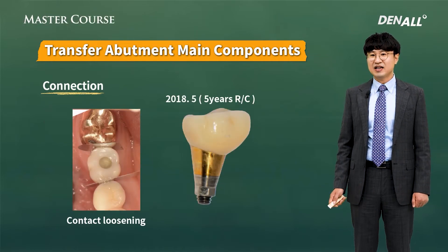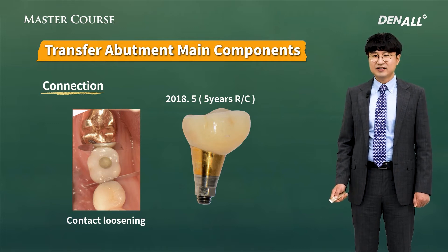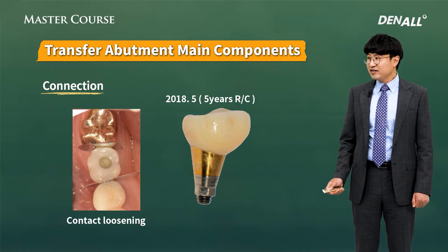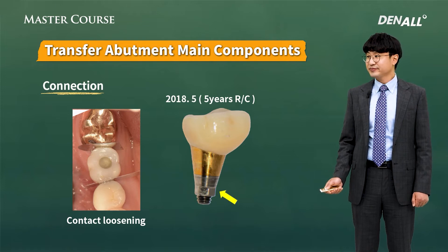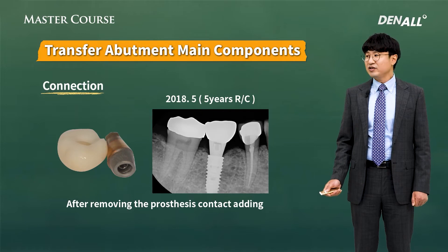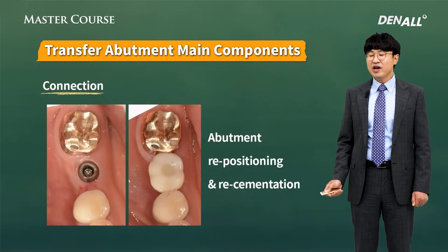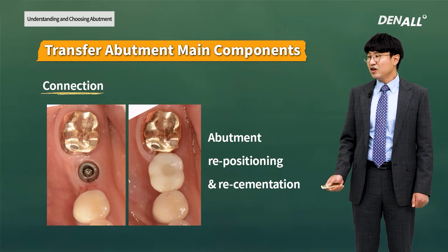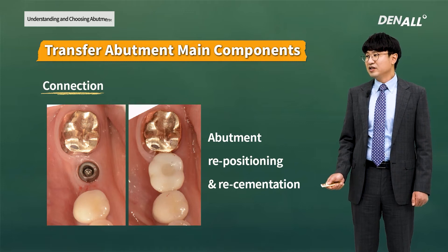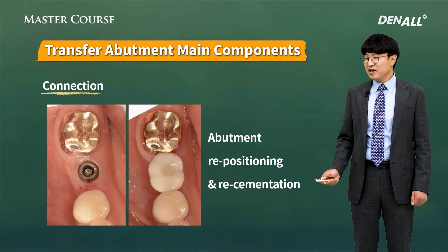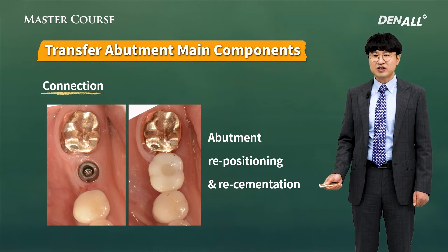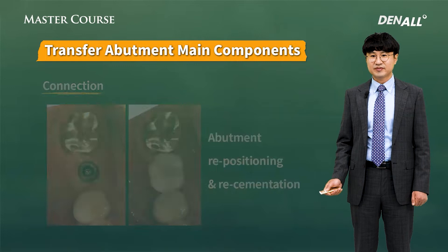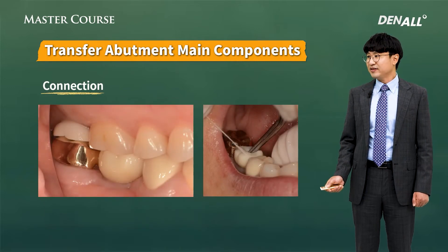Let's look at a clinical case. Over time, the contact is lost. Due to the type of prosthetics, it was easily removed. Can you see the hex form indicated by the arrow? At a lab, the contact was modified and, using the hex structure, the abutment was repositioned easily. If the abutment was a non-hex type, repositioning would have been very difficult. But as it was a hex abutment, repositioning was made pretty easily, the modification of contact was done, and re-cementation was performed. Proper contact with the adjacent tooth was recovered.